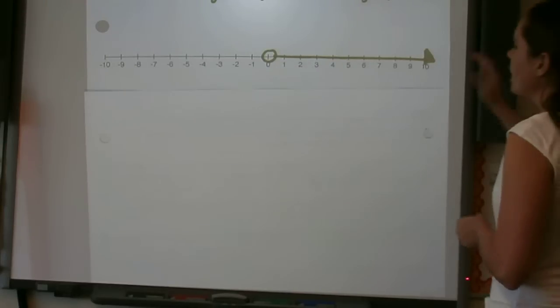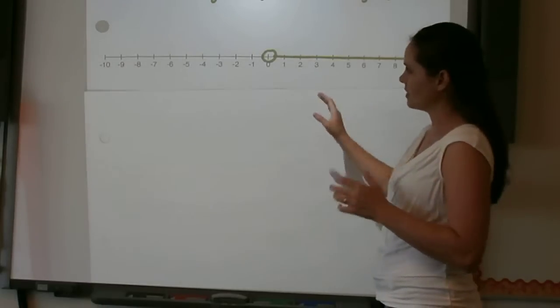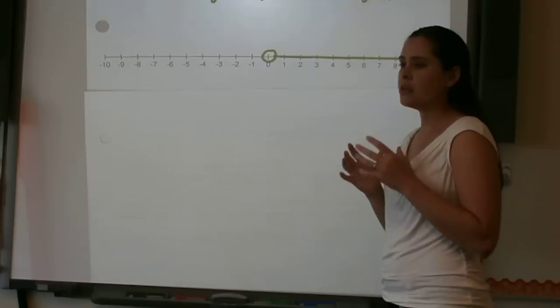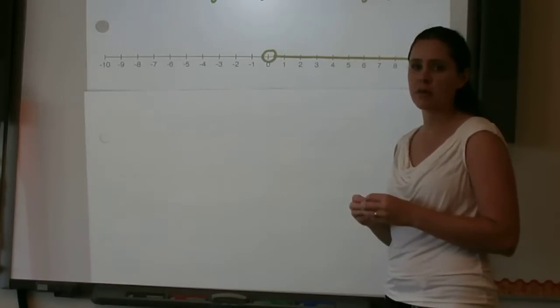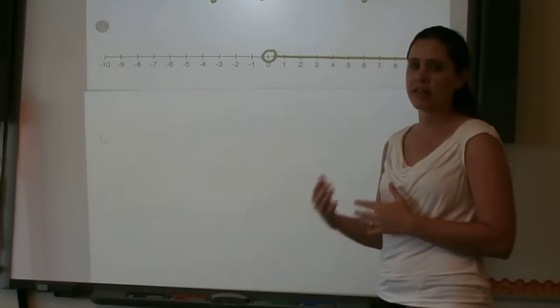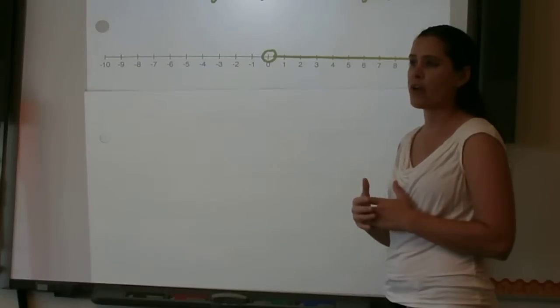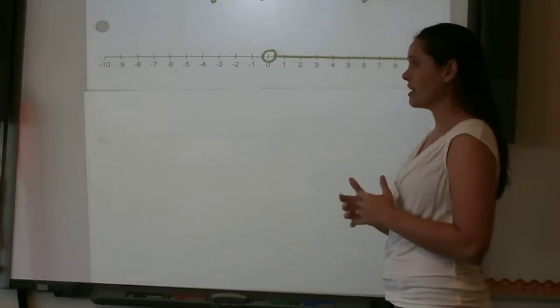And so when we read the line, we want to ask ourselves: is what is being graphed representing something that is greater than, something that is less than, something that is greater than or equal to, or something that is less than or equal to?